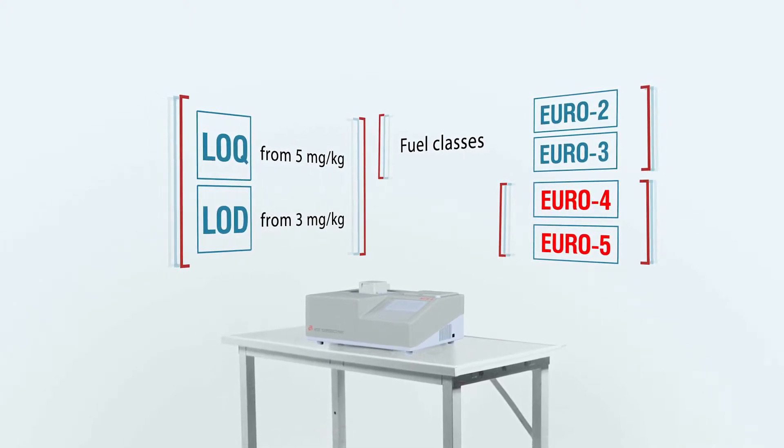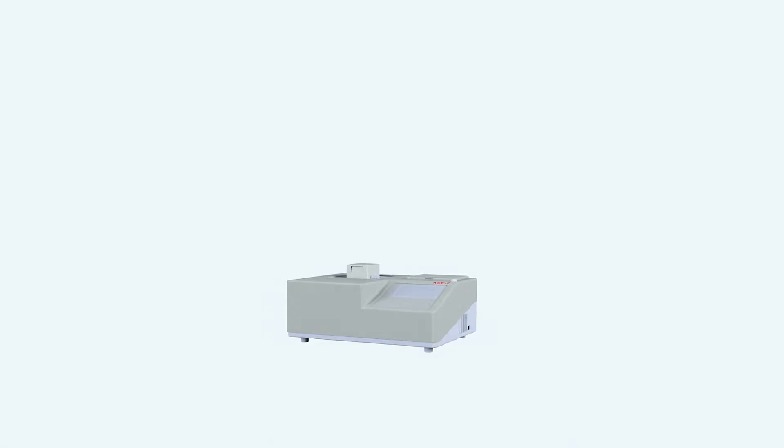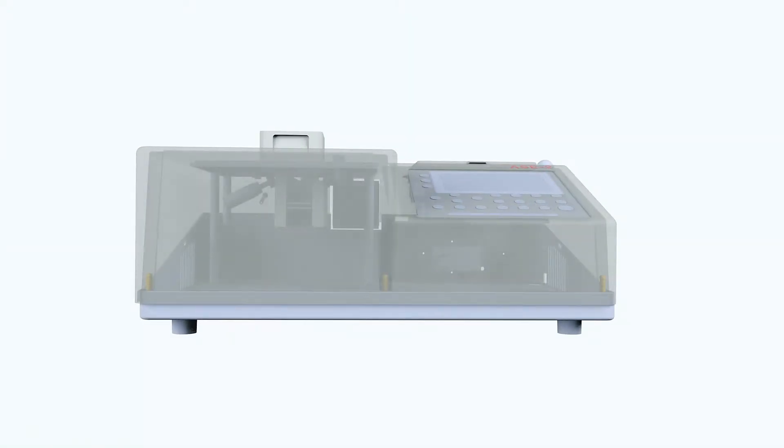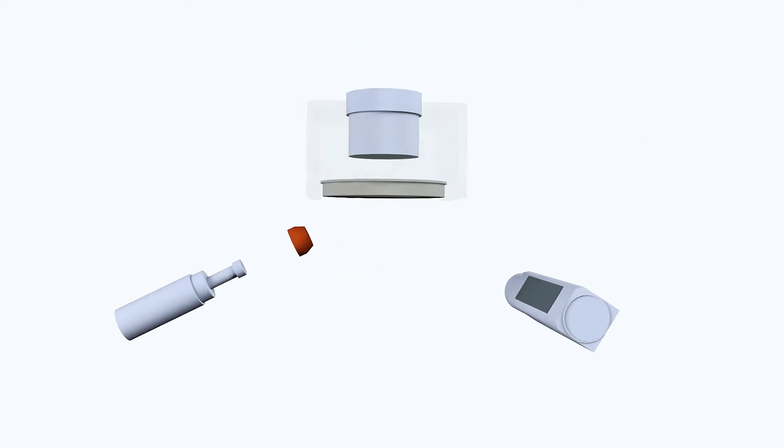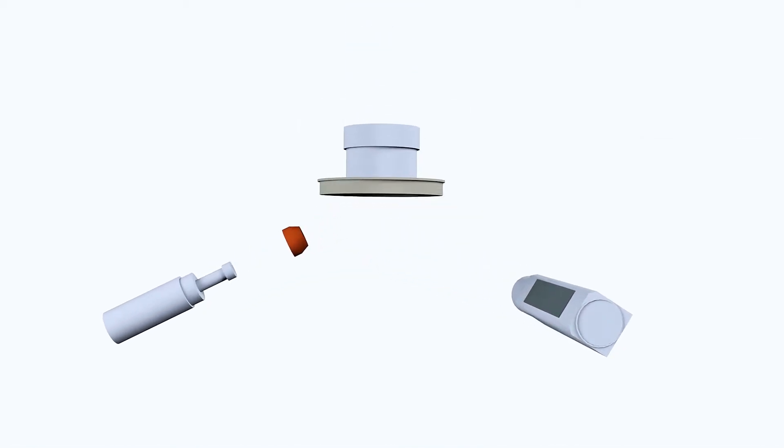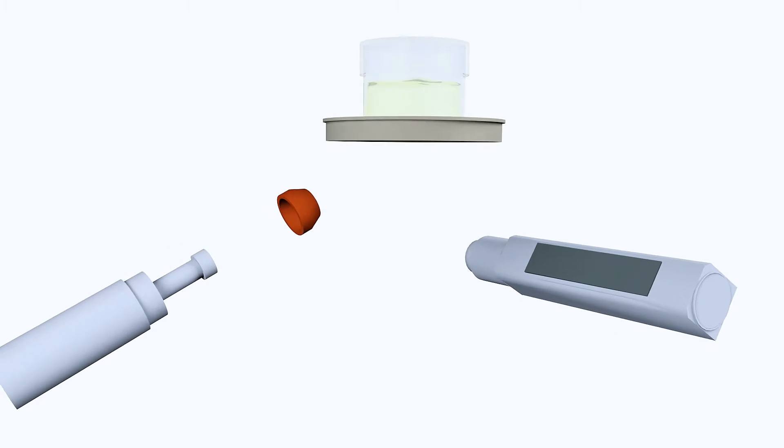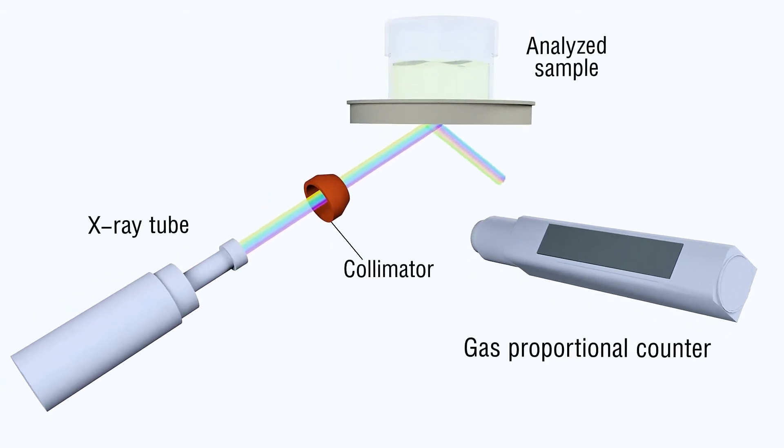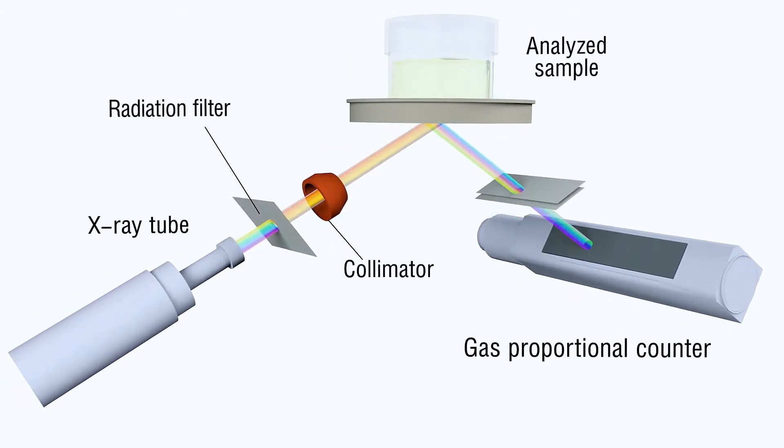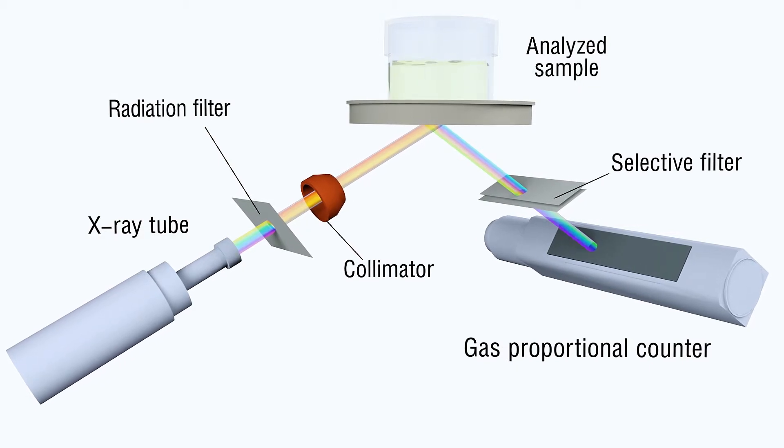The physical principle of equipment operation is based on measurement of fluorescent radiation intensity of sulfur in the analyzed sample and intensity of scattered X-ray tube radiation for matrix correction. The X-ray tube radiation excites secondary radiation in the sample, which is registered by a gas counter.